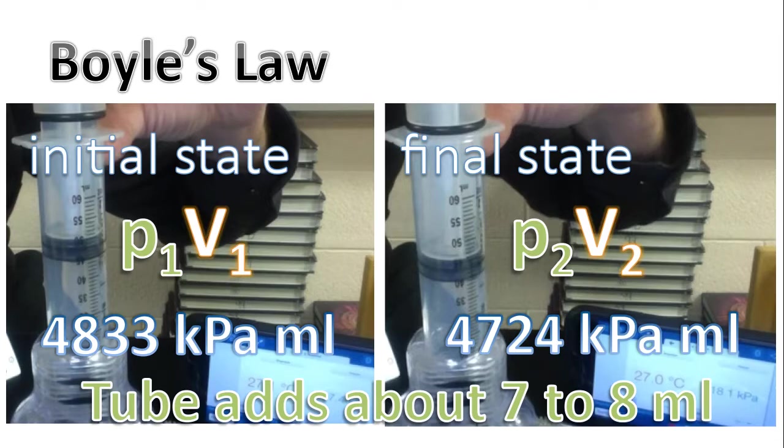There is a tube, which you cannot see in this picture, off to the side that's connected to the cylinder. This tube has a pressure gauge. As a result of the length of this tube, it adds about 7 to 8 milliliters.